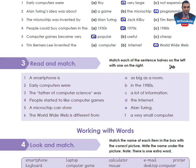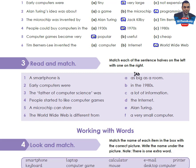Activity 3: Read and Match. Match each of the sentence halves on the left with one on the right. Left side: a smartphone is / early computers were / the father of computer science was / people started to like computer games / a microchip can store / the World Wide Web is different from. Right side: as big as a room / in the 1980s / a lot of information / the internet / Alan Turing / a very small computer. Take your time, then come back to check your answers.